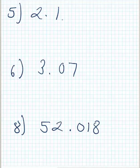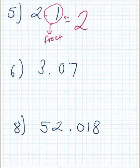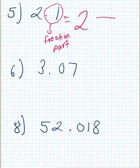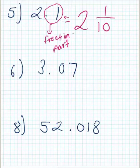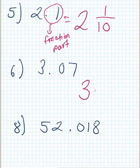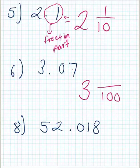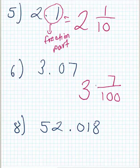For 2.1, we don't have a zero as the whole number, so we'll have a mixed fraction. The 2 becomes our big 2. The .1 is our fraction part — one decimal place means one zero on the bottom, giving 1 over 10. So the answer is 2 and 1 tenth. For 3.07, the whole number is 3. The decimal part .07 has two decimal places, so two zeros — giving 7 over 100. The leading zero doesn't need to be written, so it's 3 and 7 hundredths.